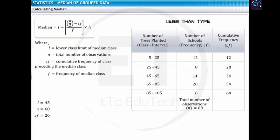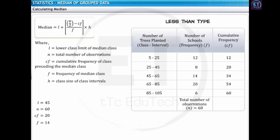The symbol f in the formula of median stands for the frequency of the median class. In this case, the median class is 45 to 65 and its frequency value f is 14. The symbol h in the formula of median stands for the class size of class intervals in the given table, assuming all class sizes are equal. In this case, the class size h is 20.